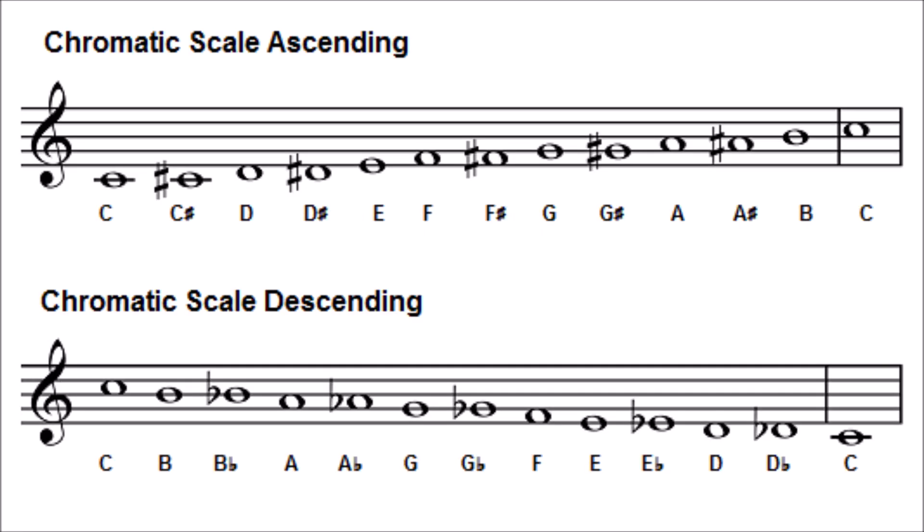Going down the scale, you start on C and move to B, B flat, A, A flat, G, G flat, F, E, E flat, D, D flat, and back to C. Notice that we use different names for some of the notes. For instance, when going up the scale, we called a particular key C sharp, but we called that same key D flat when going down. All we did was use the enharmonic equivalent.